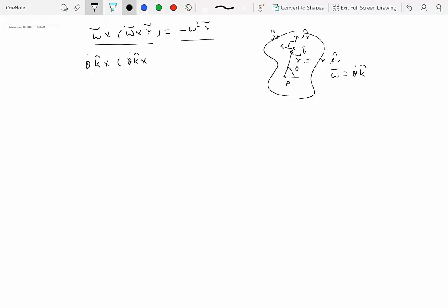So how does this come about? Let's do this. So omega is theta dot k hat cross, this is theta dot k hat, and r is some number times a unit vector along the radial direction. So we can write this as, what is k cross e_r hat? This is theta dot r k cross e_r, which would be equal to...